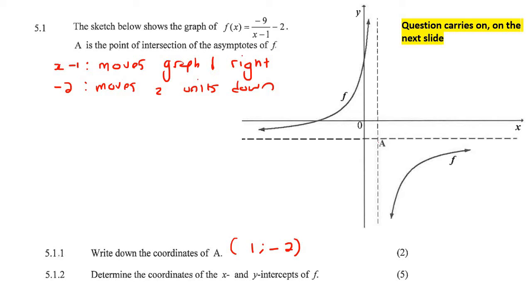The next one for five marks. Determine the coordinates of the x and y intercept. Very easy. Hey guys, x intercept, make y zero. y intercept, make x zero. That'll never change. That's a constant rule that we can always use. So to find the x intercept, we make y zero. So we say zero equals to negative nine over x minus one minus two.